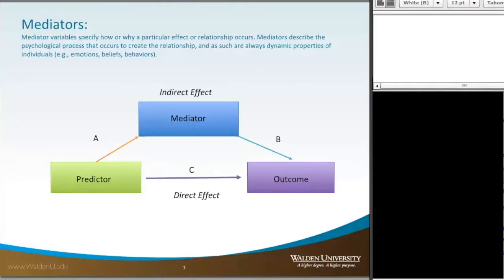Mediators, on the other hand, are a little bit different. We once again have our three variables - our predictor, our outcome, and this time we're looking at a variable that could be a mediator. If we consider all of these as scale or continuous variables, we could look from the predictor to the outcome - we would call that a direct effect, which is designated by that purple arrow labeled as C.